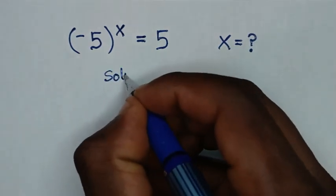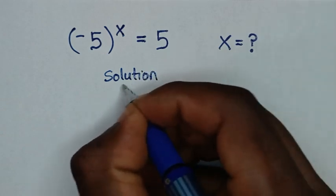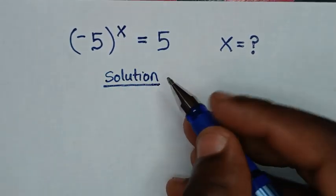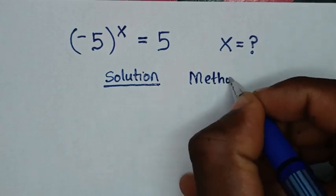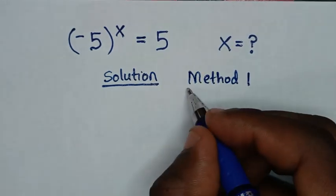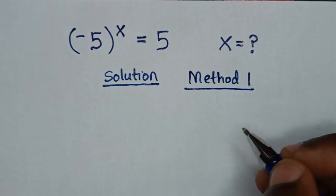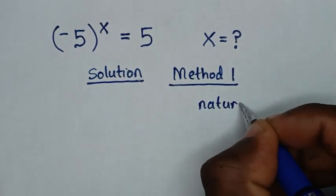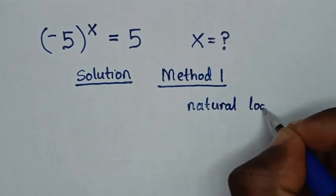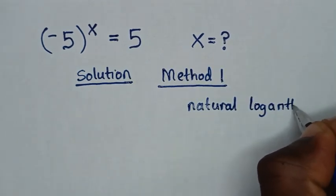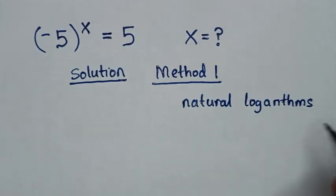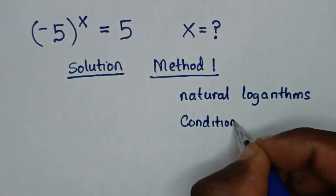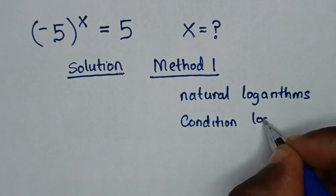Now, solution. To solve this problem we have two methods. This we call Method 1, or the first method. From this first method we'll use natural logarithms, then the conditions of logarithms.